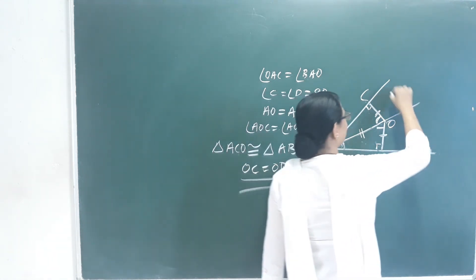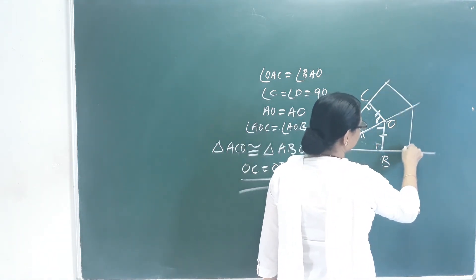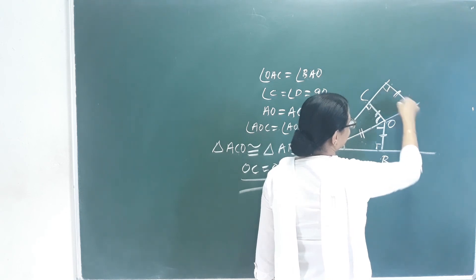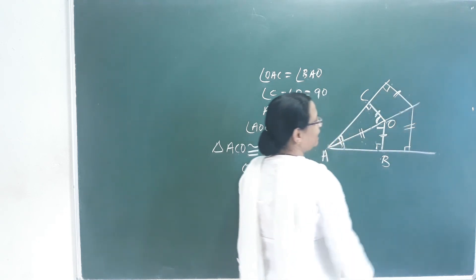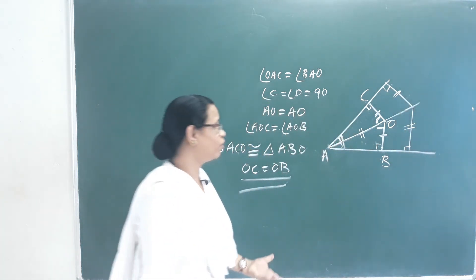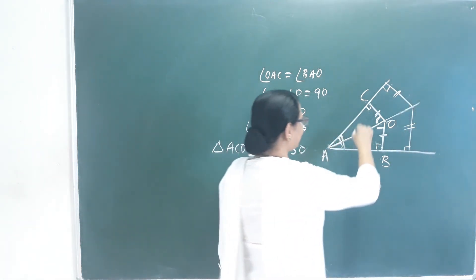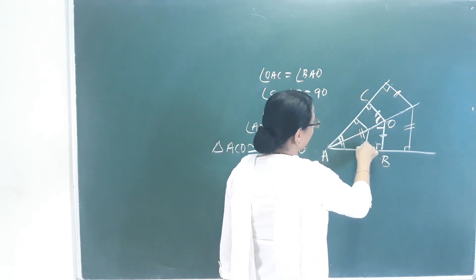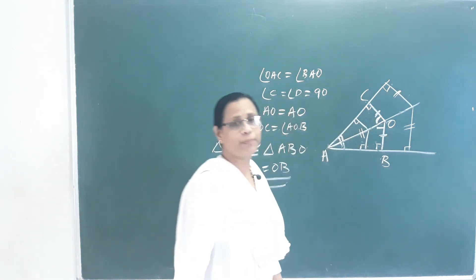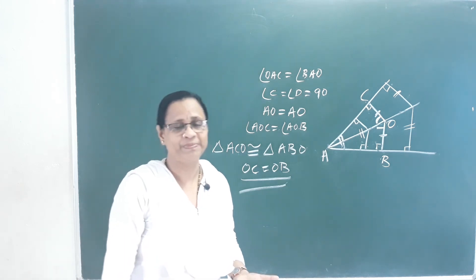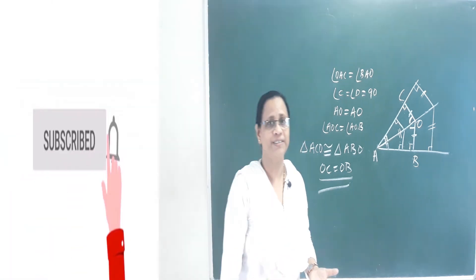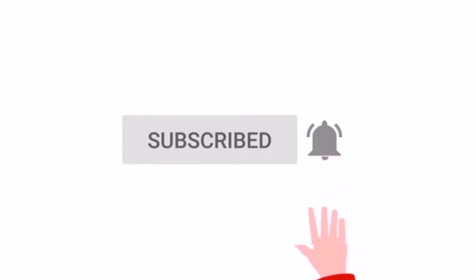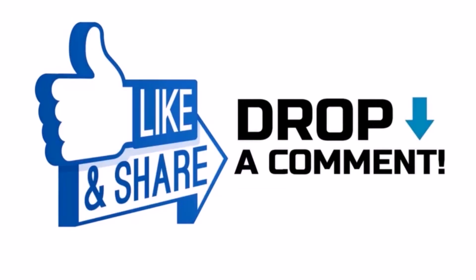Therefore OC equals OB, meaning the two perpendicular lengths from point O on the angle bisector to the two sides of the angle are equal. This completes the proof.